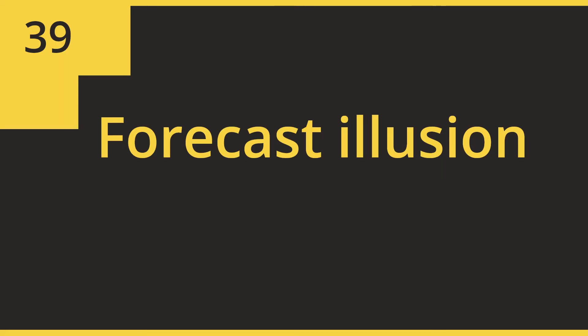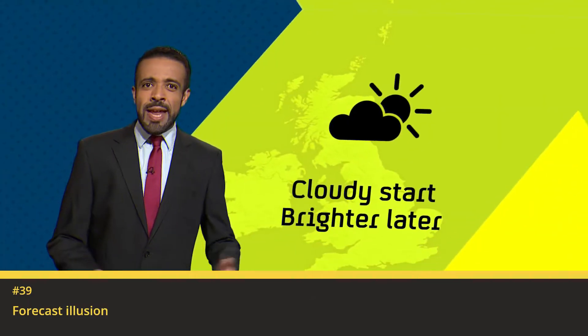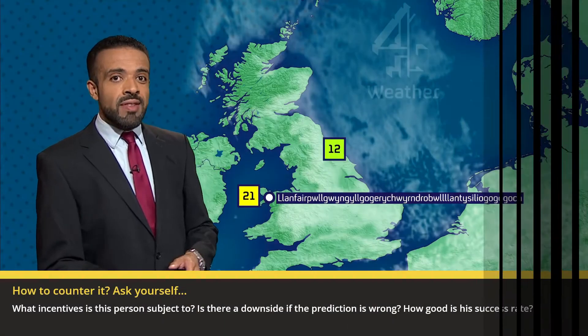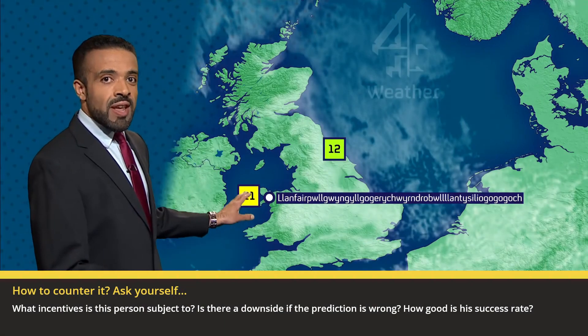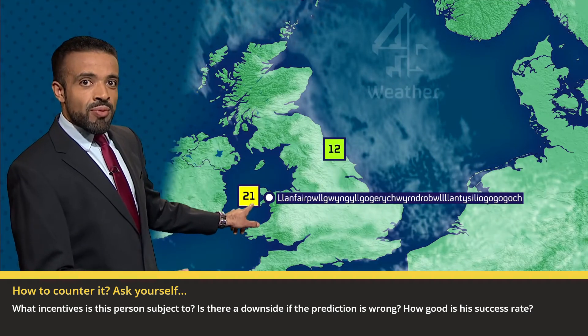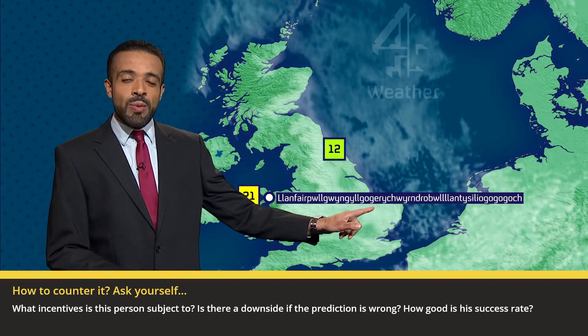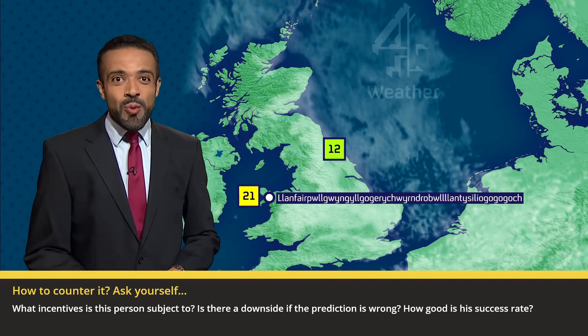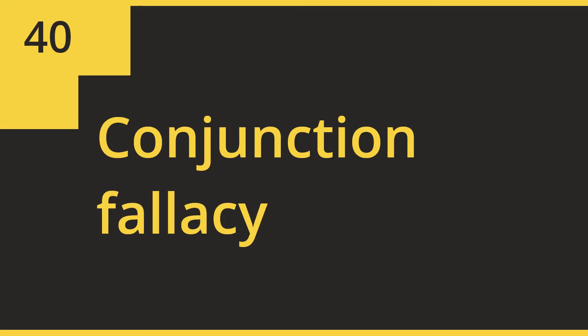39. Forecast Illusion: We tend to believe forecasts, despite poor predictability and low downside for being wrong. How to avoid this bias? Ask yourself: what incentives is this person subject to? Is there a downside if the prediction is wrong? How good is his success rate?